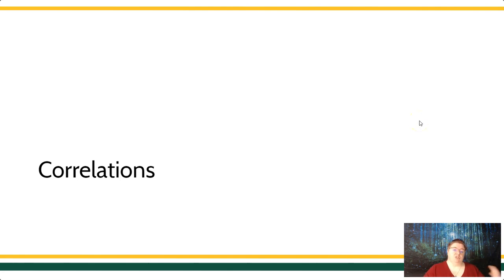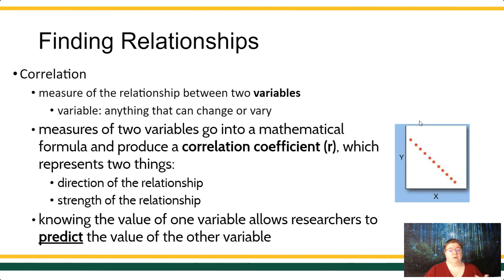When we're talking about finding relationships between two variables, very often we're talking about these correlations. We're talking about the correlation being a kind of mathematical interpretation or depiction of the strength of the relationship between two variables. So a correlation is going to tell you the mathematical equivalent of both the direction of the relationship and the strength of the relationship.